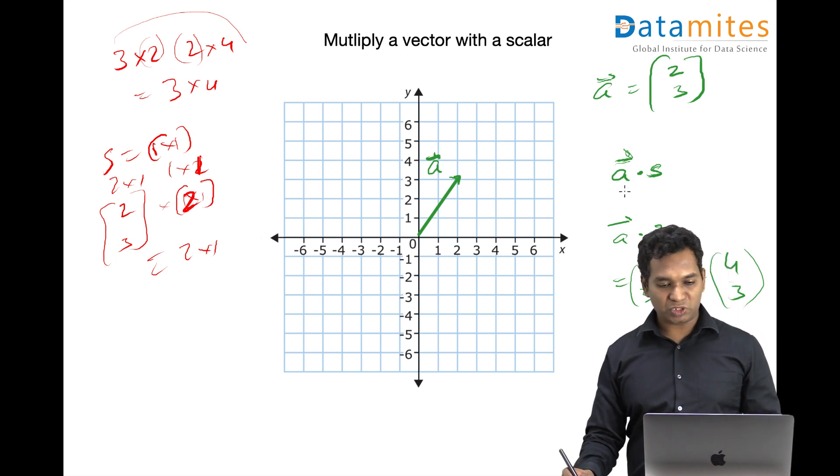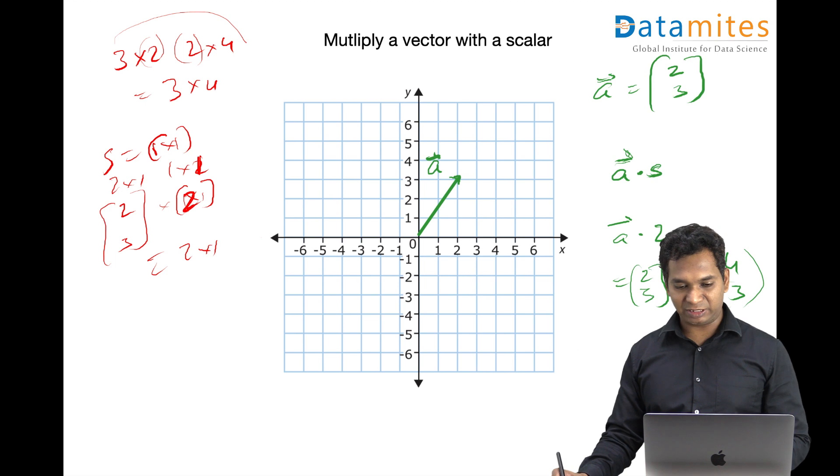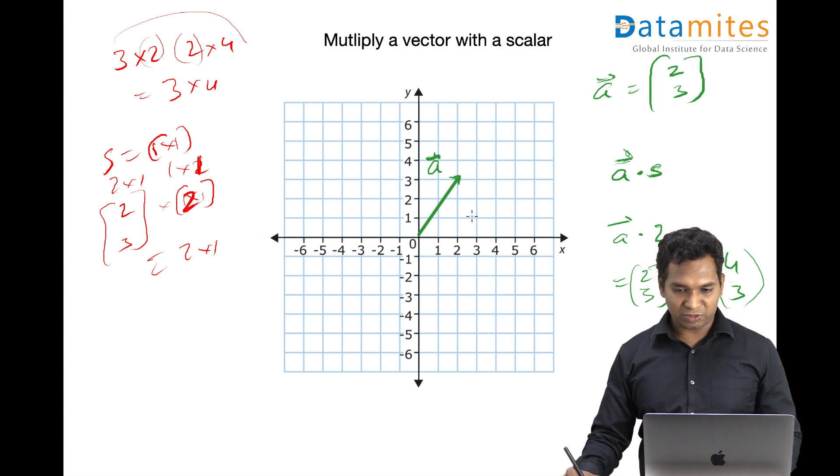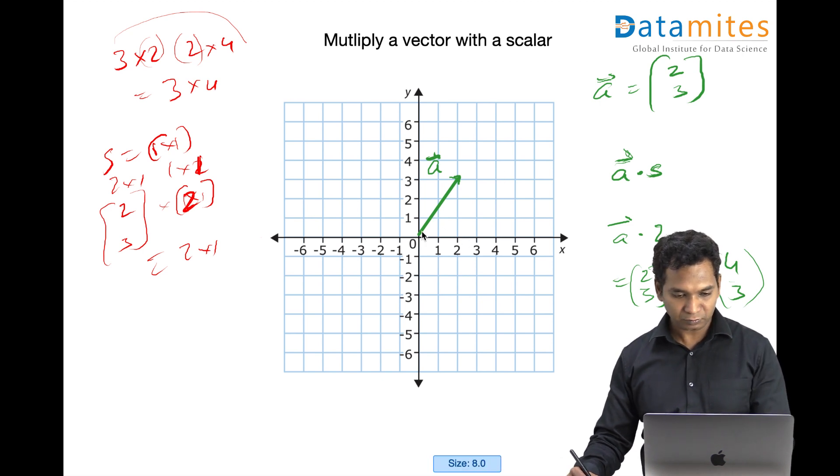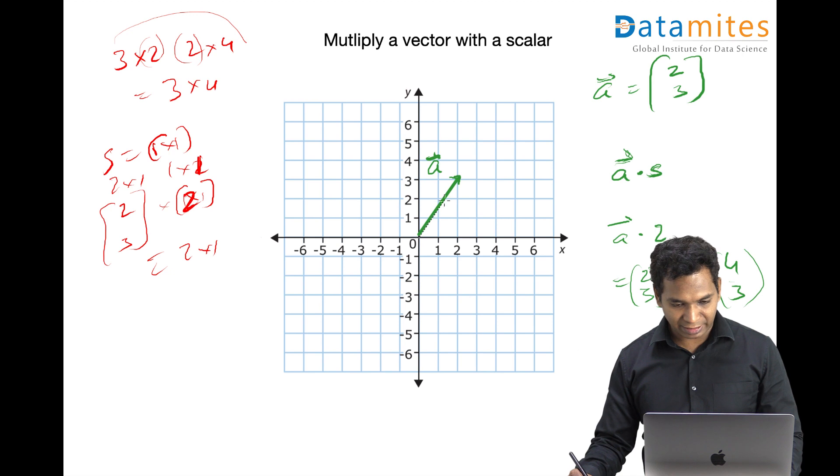By doing this, what actually happens is the vector is scaled up. So you can see, if you try to draw a line now, that will be 4 units on the x-axis and 6 on the y-axis. So this is 6.